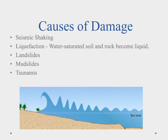Earthquakes can cause damage in a number of different ways. Perhaps we're most familiar with seismic shaking — that's the shaking of the earth causing damage to buildings, structures, and things of that nature. It's simply the shaking that happens when pressure is released in an earthquake.